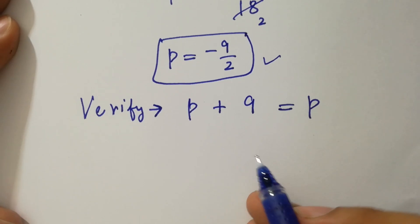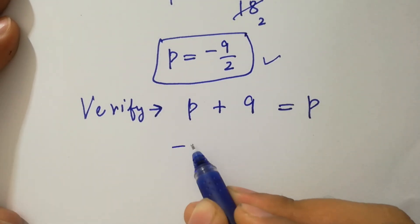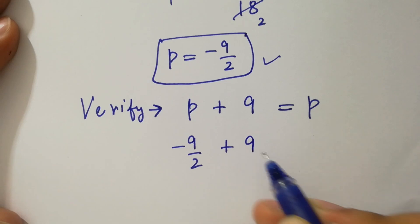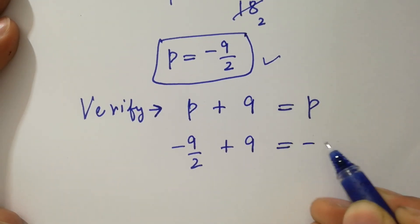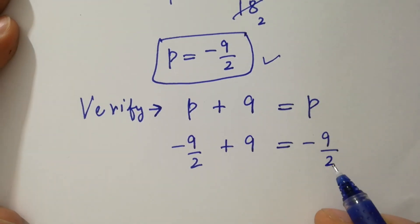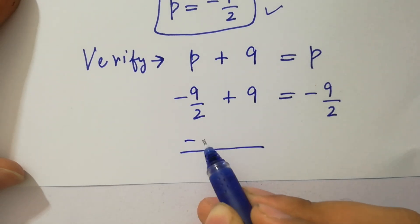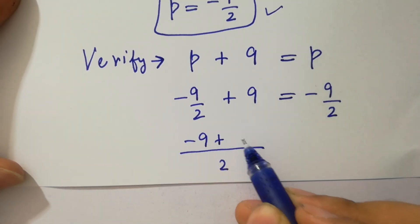Put the value of p. We have minus 9 over 2 plus 9 equals minus 9 over 2. Take LCM. We have here minus 9 plus 2 times 9.